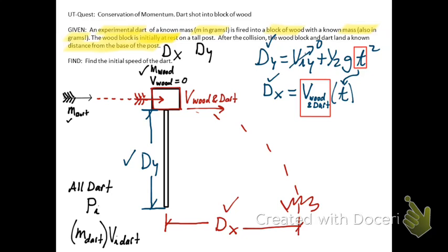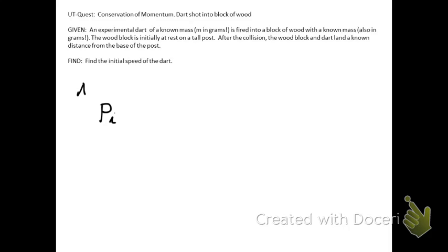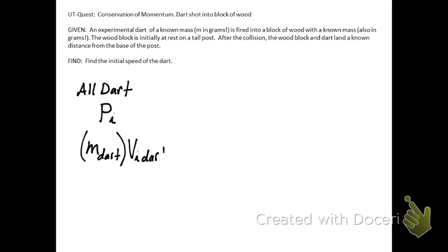Now I'm ready to go back to a conservation of momentum problem. We know initially all the momentum was in the dart, its mass times its velocity. And that's going to equal the final momentum, which is the dart and the wood stuck together. When we do this, we know all of these pieces of information except for the v initial of the dart. So now we can just plug in our known variables, solve for v initial of the dart.